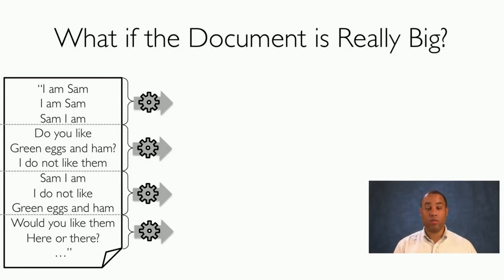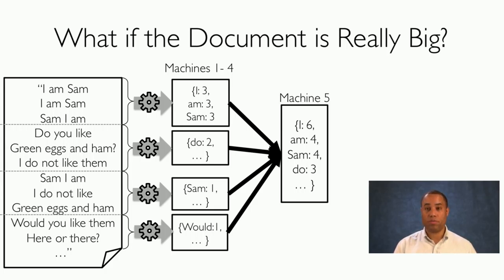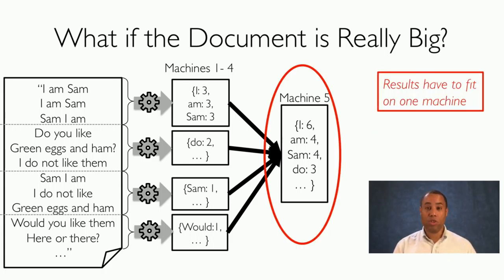What if we have a really large document? One approach is to split it up into different partitions and process those partitions individually using the same approach on each machine. Here we have four machines, and we've divided the document into four partitions. Each machine only computes the word occurrence for its partition. Then, on a fifth machine, we combine all of the results. But the problem is all of the results have to fit on one machine, so machine five has to be really large if we have a really large document with lots of words. So that's not a good approach.